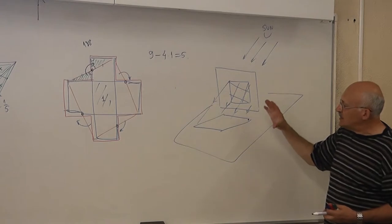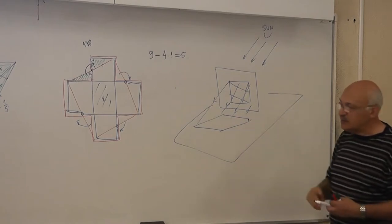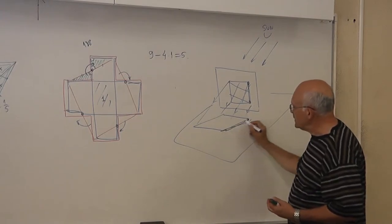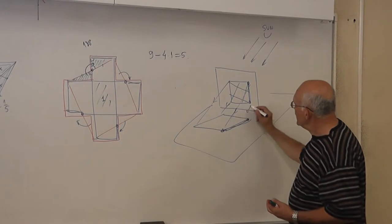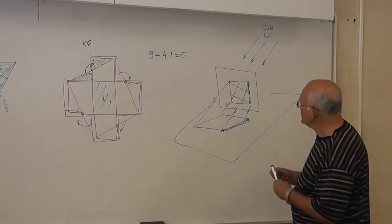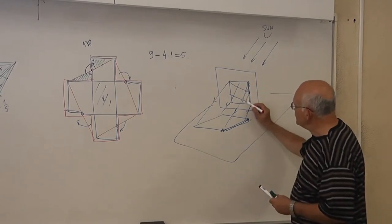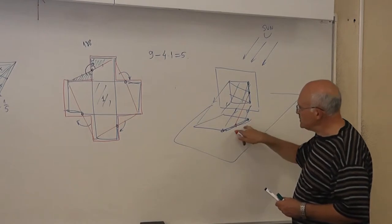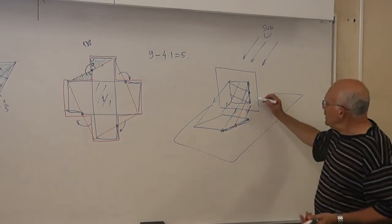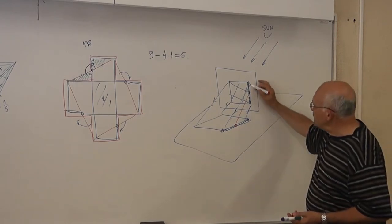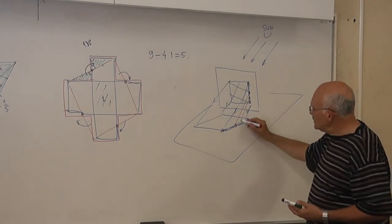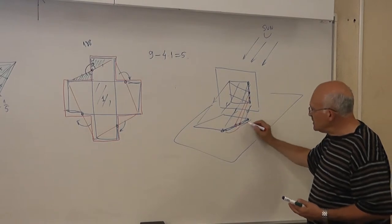When I take the shadow of a line segment, it will be a line segment. If you have a midpoint on the line segment, then the shadow of this midpoint will be the midpoint of the shadow of the segment. So midpoint remains midpoint. Actually, any point which divided a segment in some ratio, its shadow will divide the segment in the same ratio.